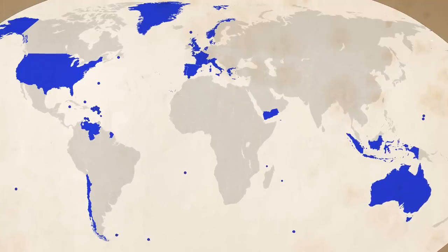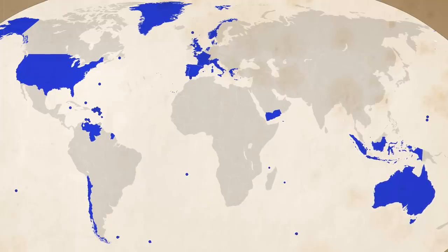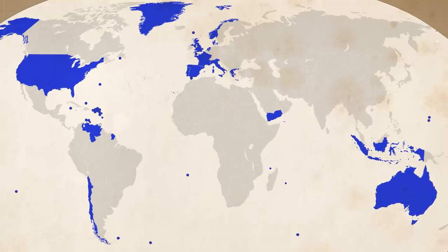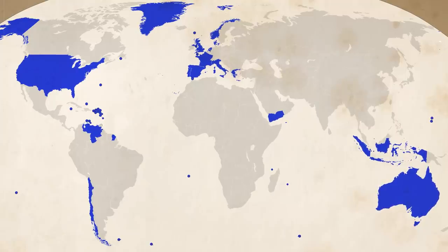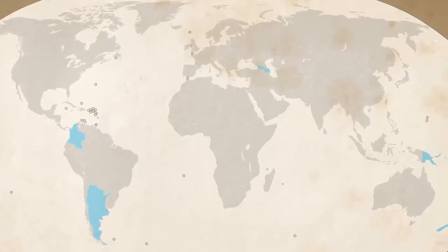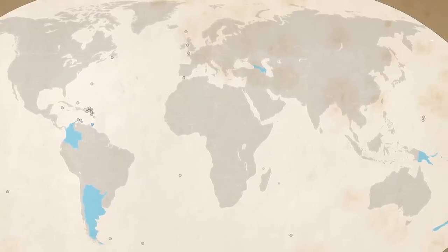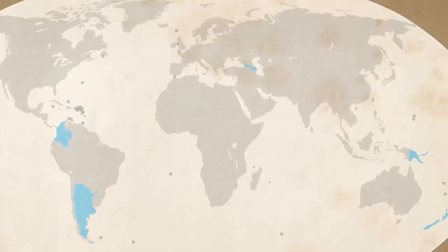Then we have the non-contiguous transcontinental countries in a slightly lighter blue, like the United States, Portugal, Spain, France, Italy, the United Kingdom, as well as Yemen, Australia, or Indonesia. These are countries whose territory is not contiguously placed across two continents, but which control territory separated across two or more continents. And in very light blue, countries that may be considered transcontinental depending on the legal status of their claims or the definition of continental boundaries used, which sometimes varies.